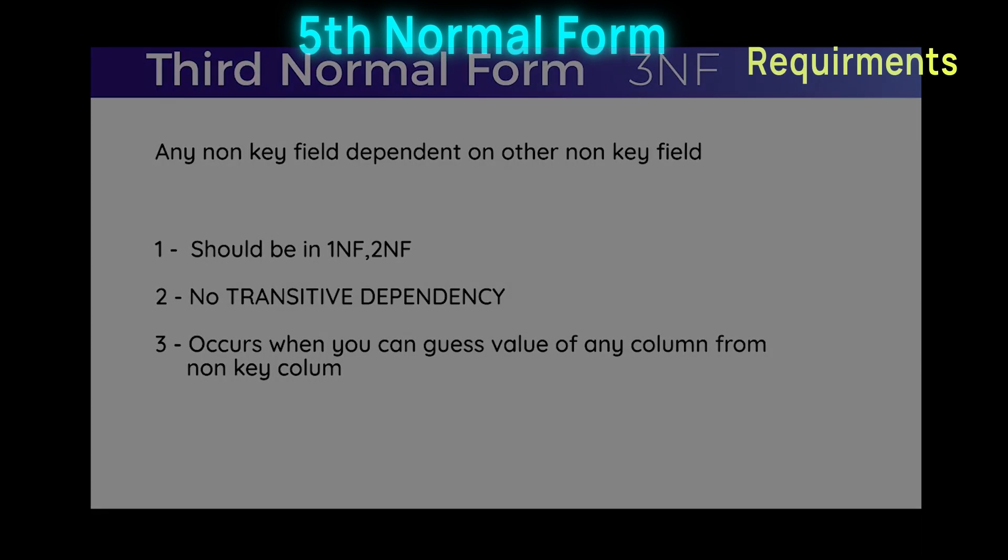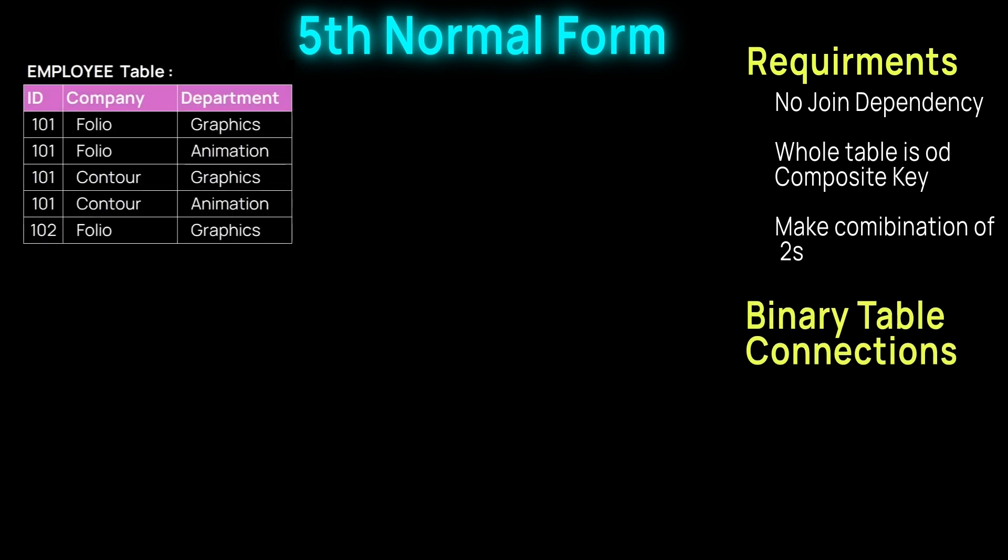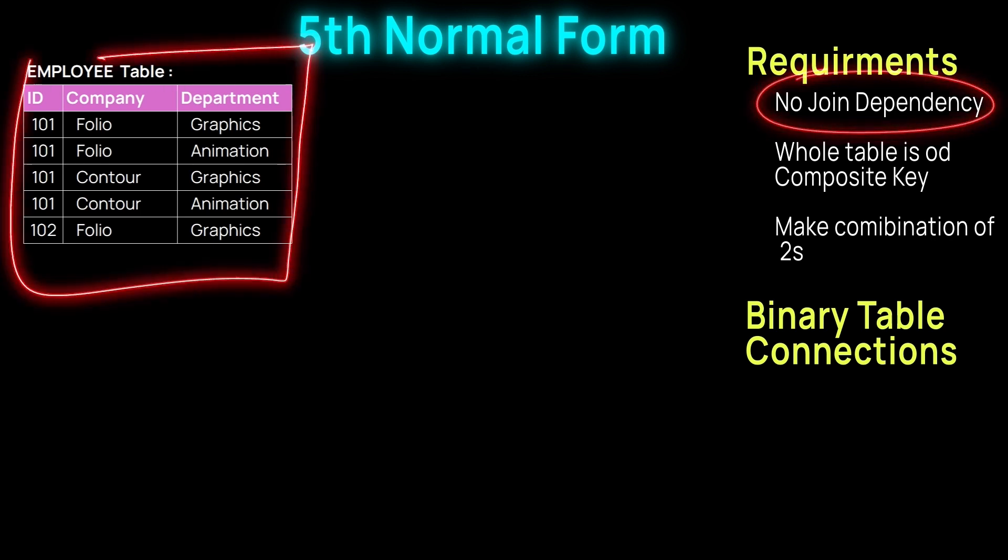The other requirements for fifth normal form are there should be no join dependency. Join dependency means any attribute can guess other attributes. If any attribute can guess any other attribute in the table, this means there is a join dependency between the tables.